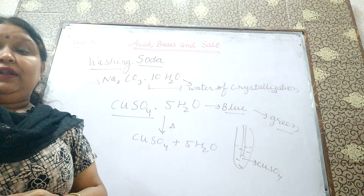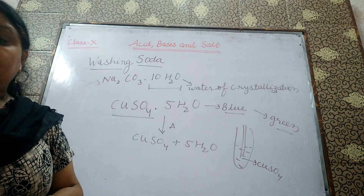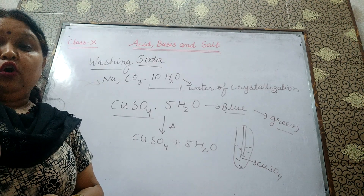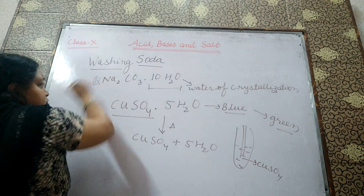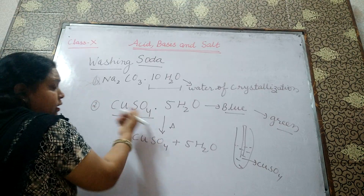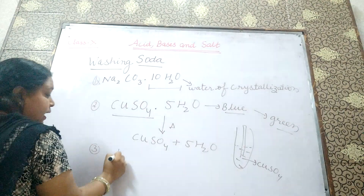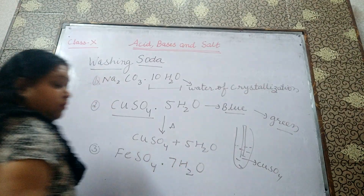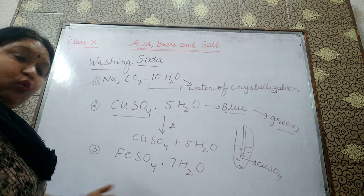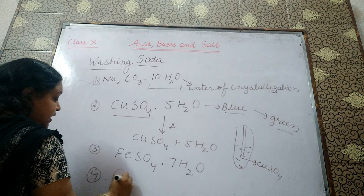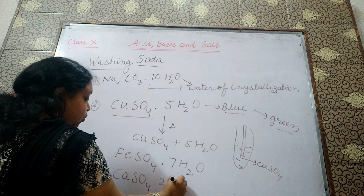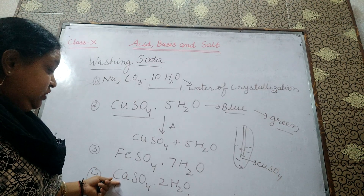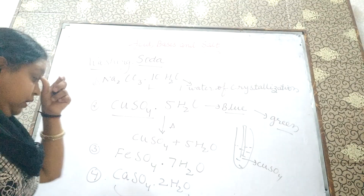Once again: the fixed number of water molecules present in one formula unit of a salt is called water of crystallization. First example: washing soda — Na2CO3·10H2O. Second example: copper sulfate — CuSO4·5H2O. Third example: FeSO4·7H2O iron sulfate. Fourth example: calcium sulfate CaSO4·2H2O, which is called gypsum — we are going to read this in our next video.